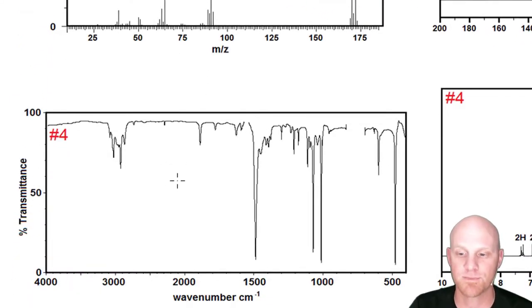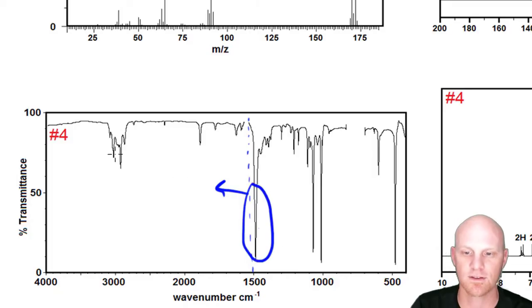Moving on to the IR spectrum. We want to look at everything outside the fingerprint region, so everything left of 1,500. This peak right here will end up being significant. Here's 3,000. If we mark up where 3,000 falls, there's 3,000 working its way up.